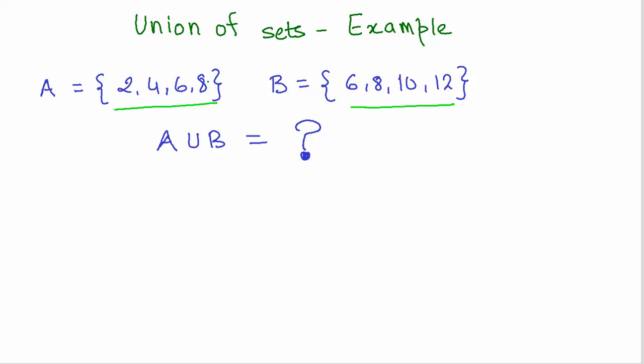The definition says all the elements that are in A or B. In this case, we would write A union B. We start with the first set, so we write down all the elements that are there in the first set: 2, 4, 6, and 8.